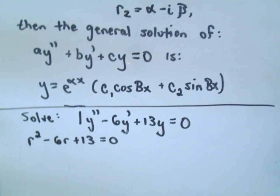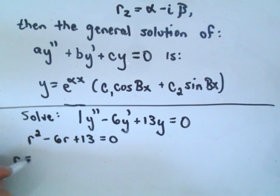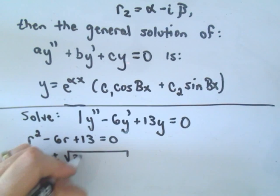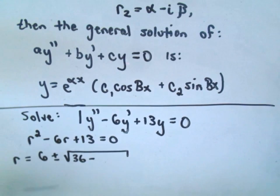I don't think this is going to factor, so I'm going to use the quadratic formula: negative B plus or minus the square root of B² - 4AC over 2A.